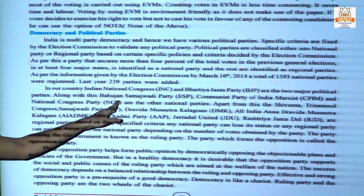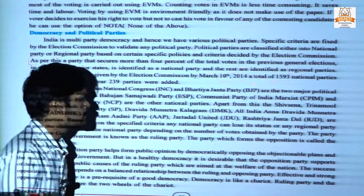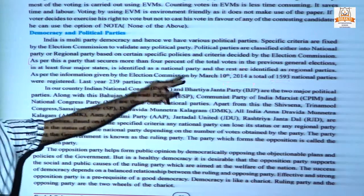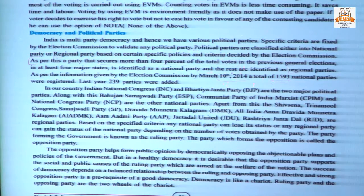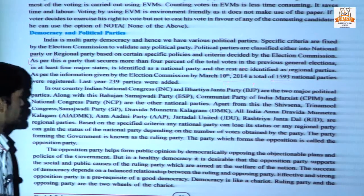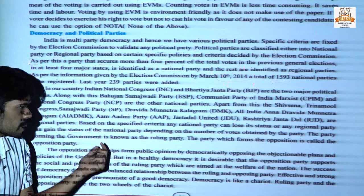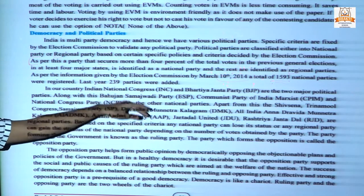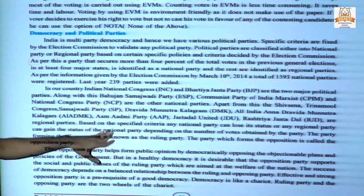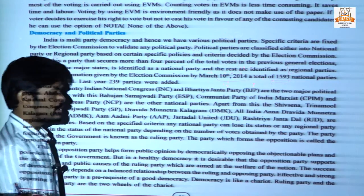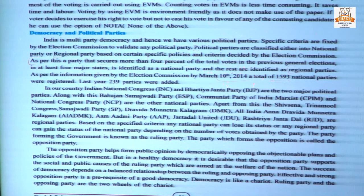Major national parties include INC, BJP, BSP (Bahujan Samaj Party), CPI(M) (Communist Party of India Marxist) and NCP (National Congress Party). Regional parties include Shiv Sena, Trinamool Congress, Samajwadi Party, DMK, AIADMK, Aam Aadmi Party, JDU and Rashtriya Janata Dal, among others. Whether your party is declared national or regional depends on the number of votes obtained in the previous general election.